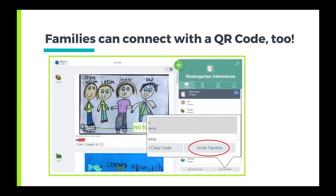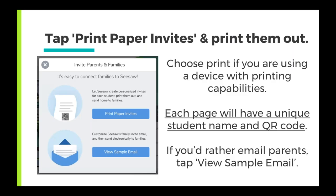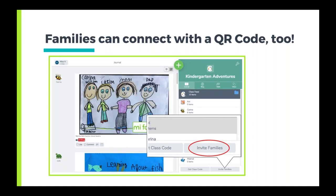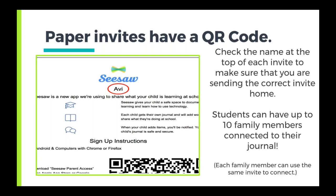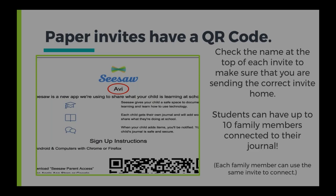Another really cool way Seesaw uses QR codes is for families to sign in. When you print an invitation for family members, that invitation comes with a QR code. After you click 'Invite Families' at the bottom right of your class, Seesaw will ask if you want to print a paper invitation. If you choose that option, it prints a paper invitation with a unique QR code for that specific student. The student's name is at the top of the page, and their unique code is at the bottom. A student can have up to ten family members connected, and that same piece of paper can be used by up to ten people.